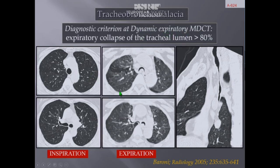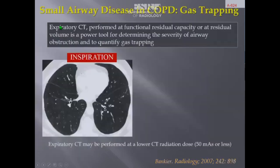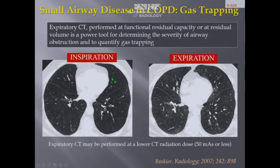The patient is asked to inspire and then expire; during the last part of forced expiration, scanning is performed. The criterion for diagnosis is a reduction of the tracheal lumen area of more than 80% compared to the inspiratory scan. For small airway disease in COPD, in the absence of emphysema, if you have decreased lung attenuation and gas trapping at expiration without any change in attenuation or anterior-posterior gradient of attenuation as normally expected, this confirms gas trapping.